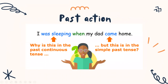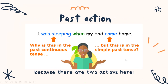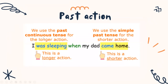Now let's have a look at this sentence: I was sleeping when my dad came home. On the left-hand side, why is this in the past continuous tense? And on the right-hand side, why is this in the simple past tense? Because there are two actions here. We use the past continuous tense for the longer action and the simple past tense for the shorter action. So sleeping is a longer action and my dad came home is a shorter action. We have to identify which one is the longer action so that we can use the correct tense.